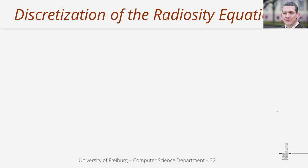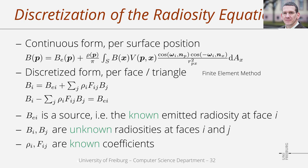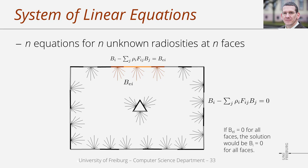Here is a summary of the discretization process. We started with the continuous form of the radiosity equation considering radiosity values per position, then derived a discretized version considering radiosity values per patch. In this equation, BEi represents known emitted radiosity at patch i, BI and BJ are unknown radiosities at patches i and j, and rho_i and Fij are known coefficients. Considering the discretized equation at all patches gives n equations for n unknown radiosities. Black and gray line segments indicate patches of a scene, while red and orange line segments indicate patches that emit light.